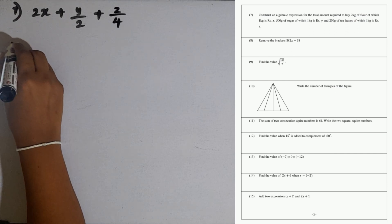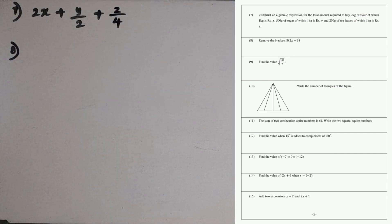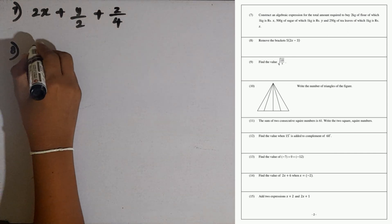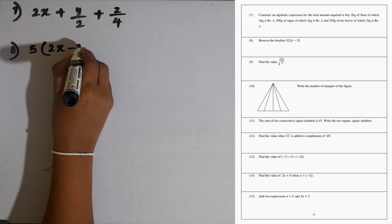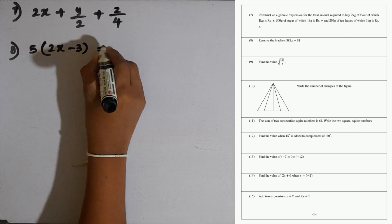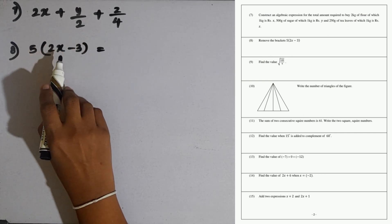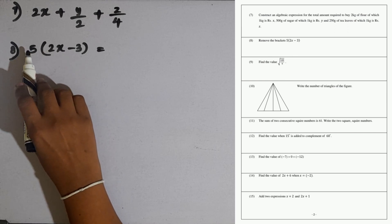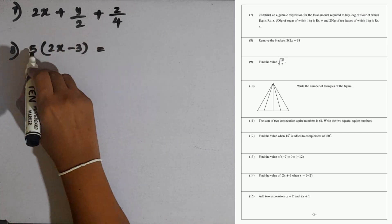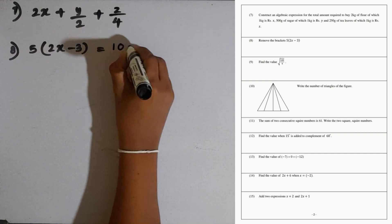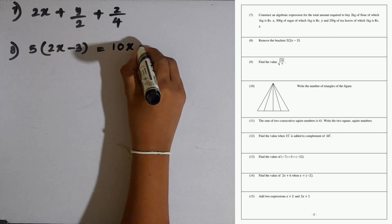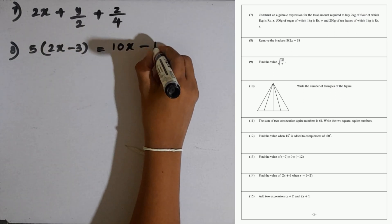Then question number 8: remove the brackets, 5 times 2x minus 3. When removing the bracket, each term inside the bracket should be multiplied by the number or term outside the bracket. So 5 multiplied by 2x is 10x, then minus sign comes here, 5 multiplied by 3 is 15.